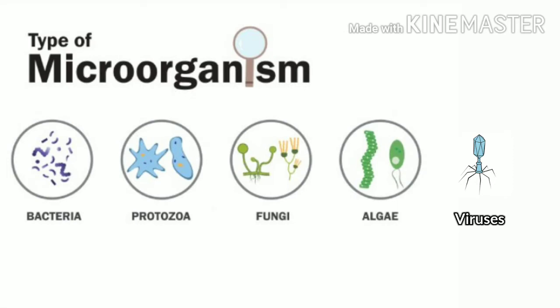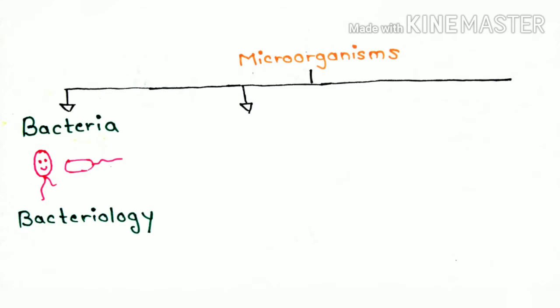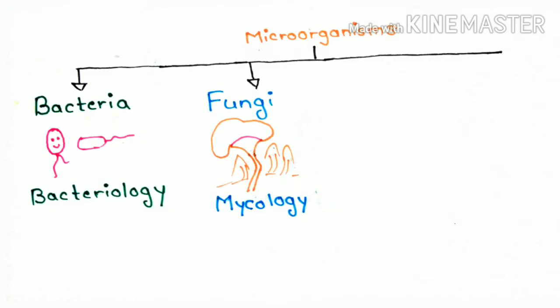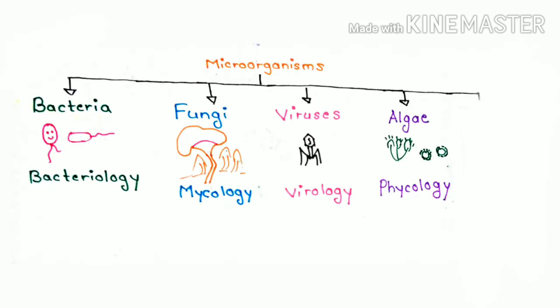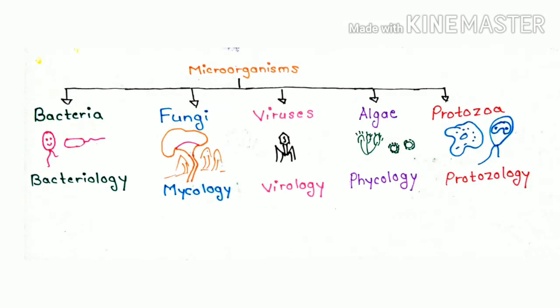In microorganism, we include bacteria, fungi, viruses, algae and protozoa. So, it gives rise to five different and main branches that include bacteriology, where we study about bacteria. Second is mycology, where we study about fungus such as yeast and molds. Third is virology, where we study about the viruses. And the fourth is phycology, where we study about algae. And the last is protozoology, where we study about protozoa, like single cell organism like amoeba.